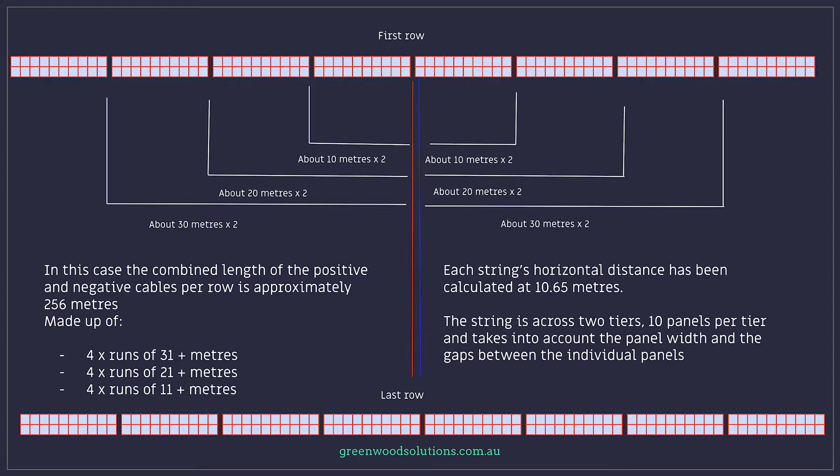Each string's horizontal distance has been calculated at 10.65 meters. The string is across two tiers, 10 panels per tier, and takes into account the panel width and the gaps between the individual panels. For more details see our previous presentation.